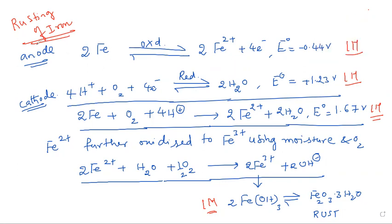When iron is exposed to moisture for a long time, a brown coating of hydrated ferric oxide is formed on the surface. We call this rusted and the phenomenon is called rusting of iron.